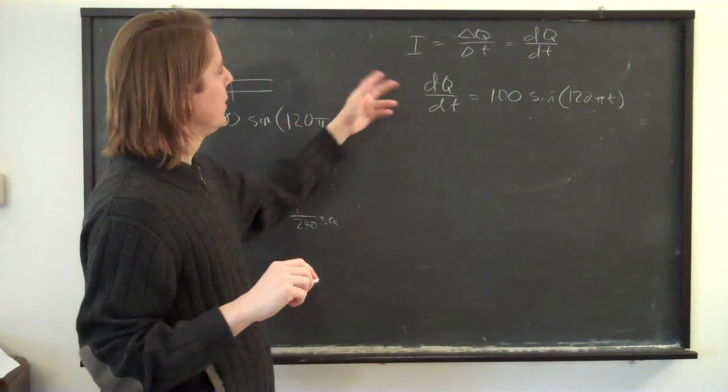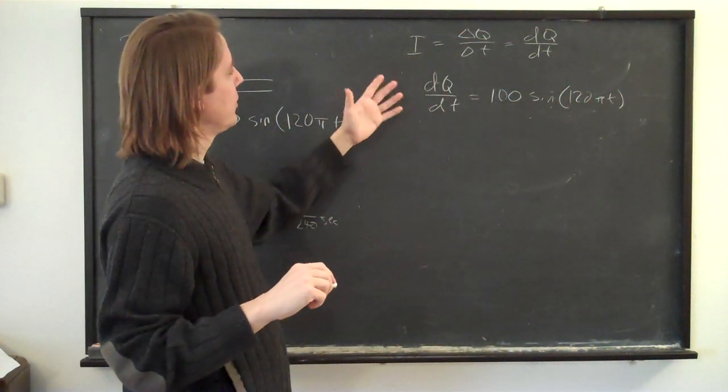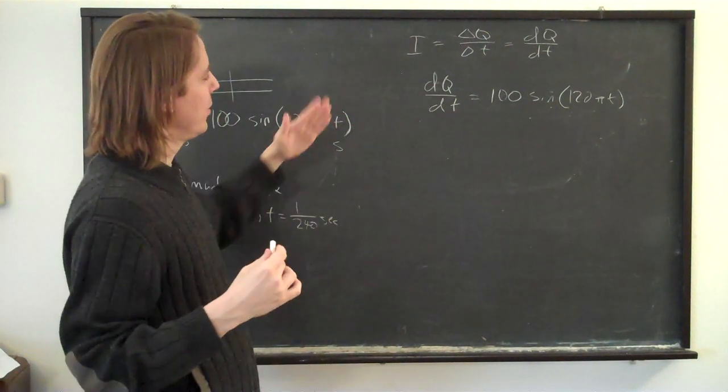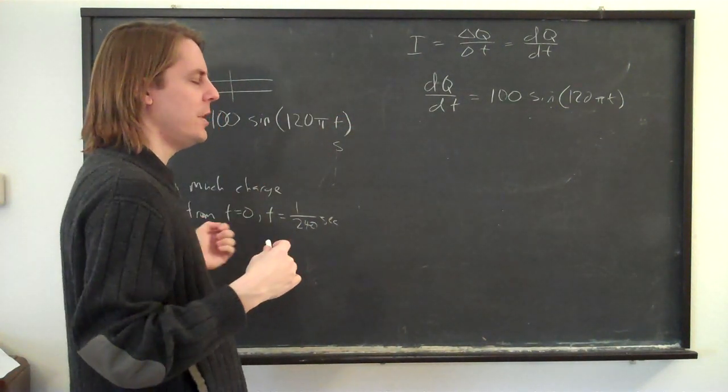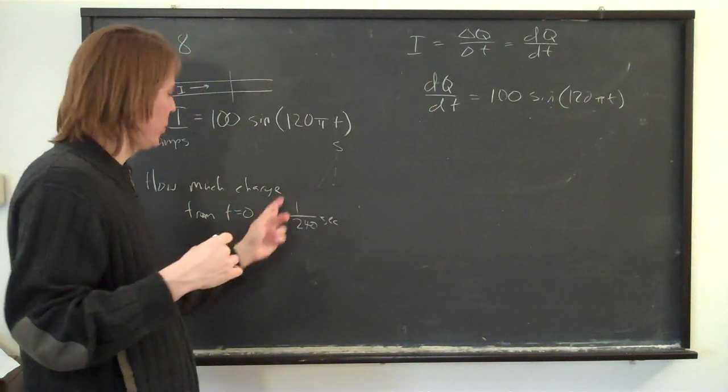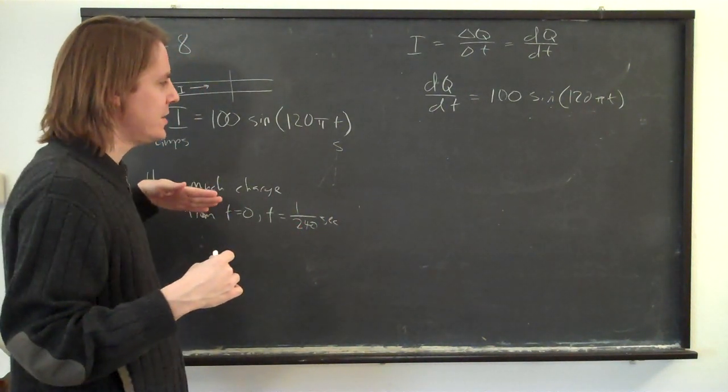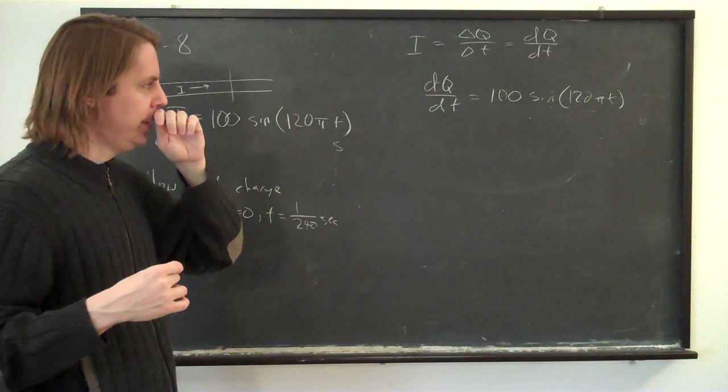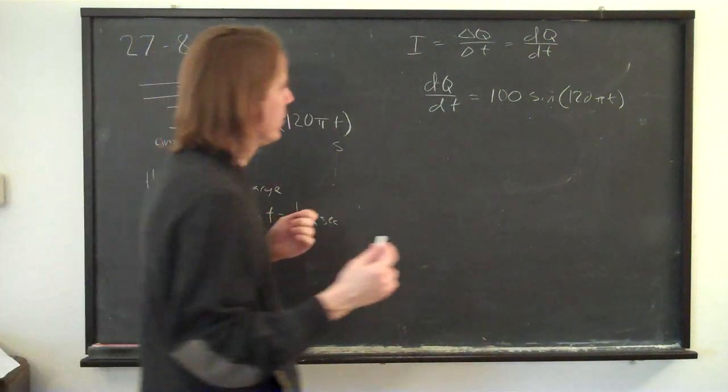How much current flows? You can't just do it by multiplying, because it's changing through time. Through the zero to two hundred and forty, from zero to one two hundred and fortieth of a second, it's changing in a sinusoidal pattern. To get the total, you have to do an integral.